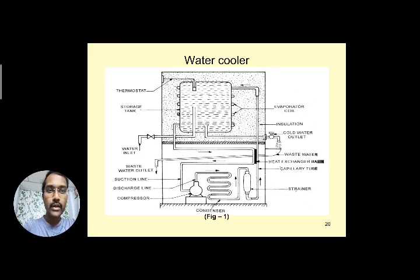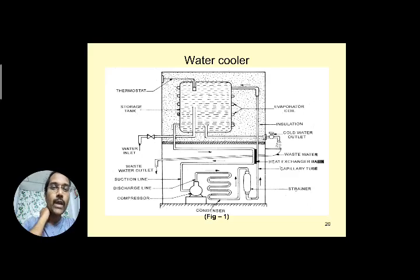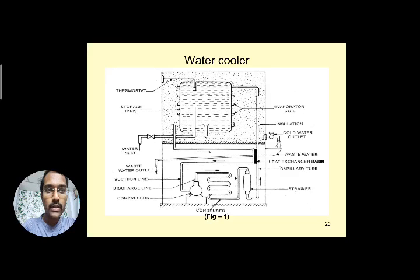Water inlet is usually from the top. From the evaporator tank, the pipeline comes back and where the capillary tube and this return tube meet, heat exchange takes place — acting as a heat exchanger. This pipeline then becomes the suction line connected back to the compressor. So there is a suction line, discharge line, compressor, strainer, condenser, capillary tube, evaporator, thermostat, and a drain pipe for waste water collected in a basin.